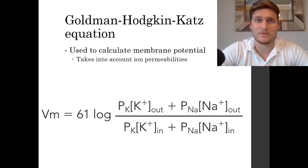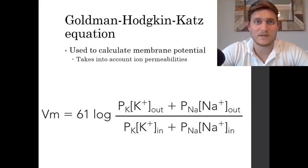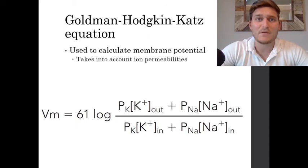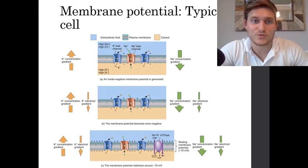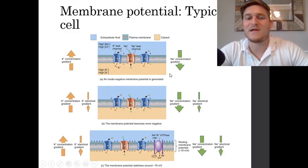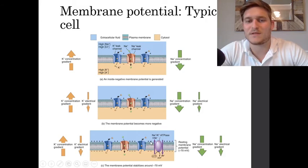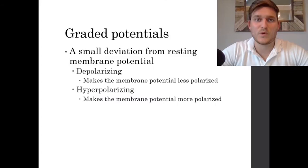Sodium and potassium are not the only ions inside and outside of the cell. We have to take into account the permeability of all ions — including sodium, potassium, calcium, chloride, and others — in order to calculate the membrane potential. All along the membrane you are going to see ion channels, including leak channels, voltage-gated channels, and mechanically gated channels, which allow ions to move downhill on their concentration gradient. We also have pumps — the famous sodium-potassium pump or sodium-potassium ATPase — which uses energy to transport ions uphill in order to balance membrane potential.